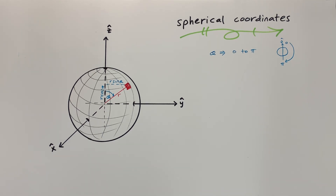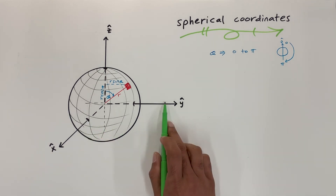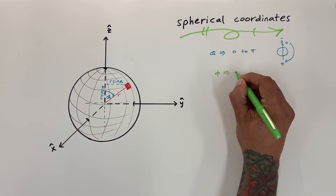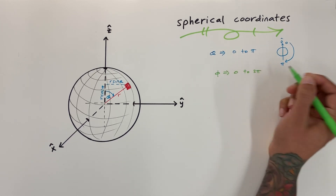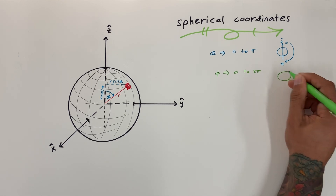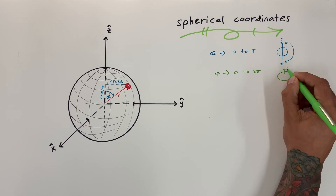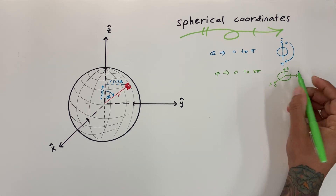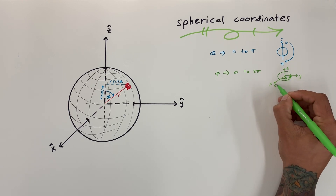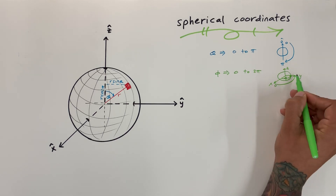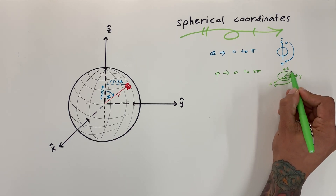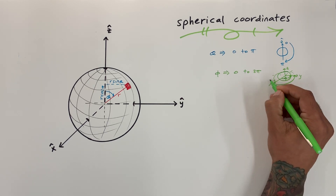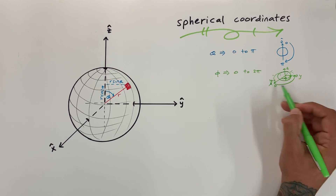We have phi that sweeps from the X to the Y, so it's just in the XY plane. Phi runs from zero to two pi. In a sketch with Z, Y, and X directions, phi starts at X, runs toward Y, goes all the way toward the back, negative X, negative Y — it stays in the XY plane — and we go all the way around until we come back to X. That's a total of two pi, so phi sweeps all the way to two pi.